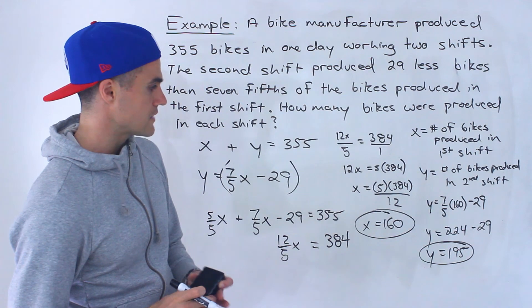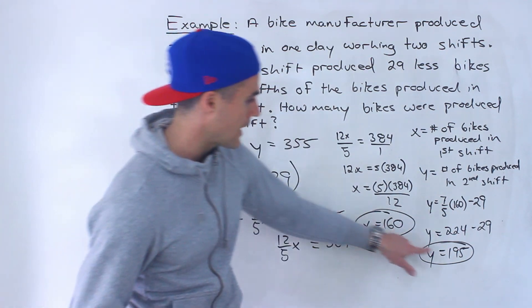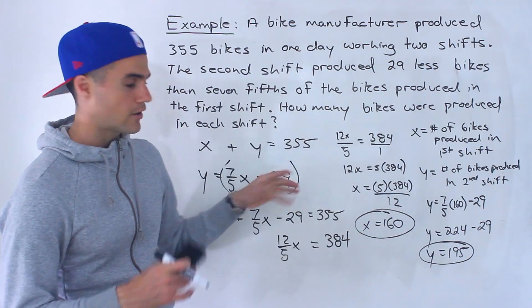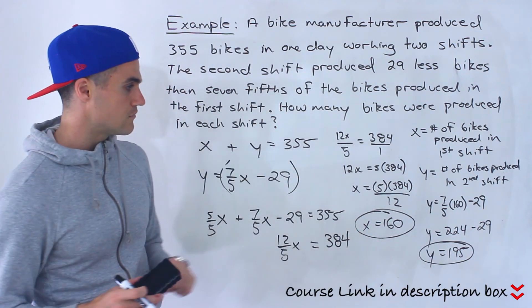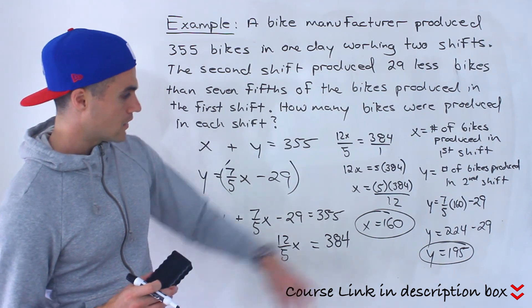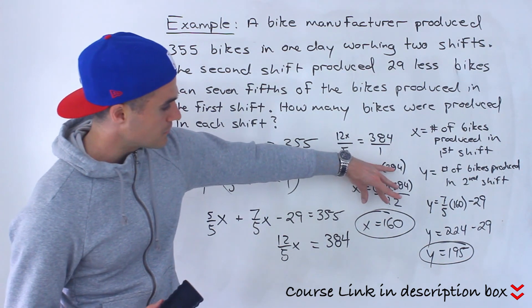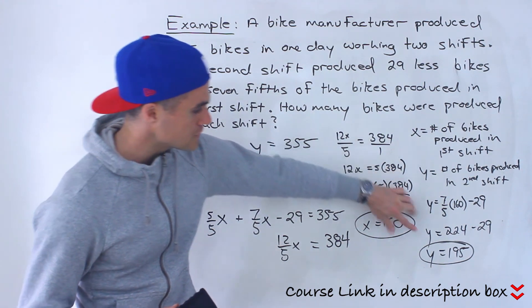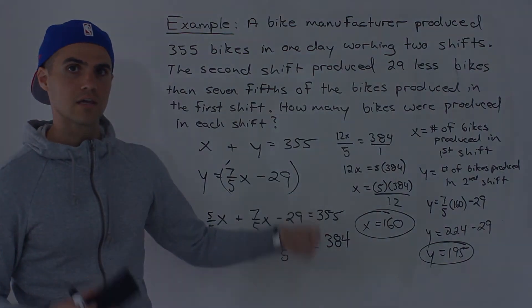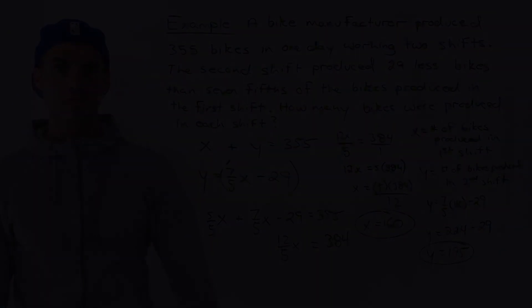Those are the two answers. Notice that if we add them up, we do indeed end up getting 355 bikes for the total day. The first shift produced 160 bikes and the second shift produced 195 bikes.